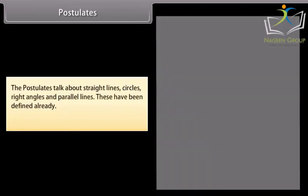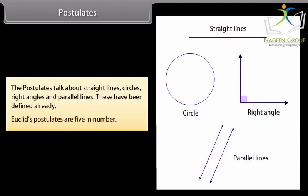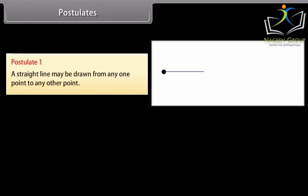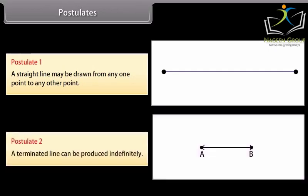Postulates. The postulates talk about straight lines, circles, right angles, and parallel lines. These have been defined already. Euclid's postulates are five in number. First postulate is: a straight line may be drawn from any one point to any other point. Postulate second is: a terminated line can be produced indefinitely.